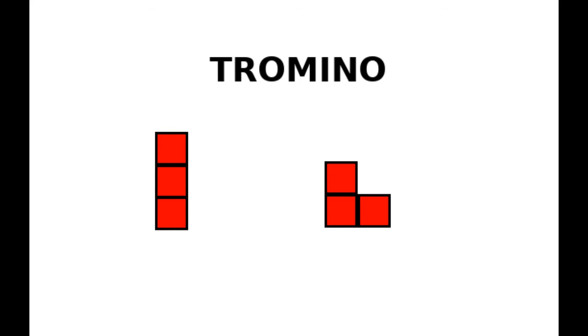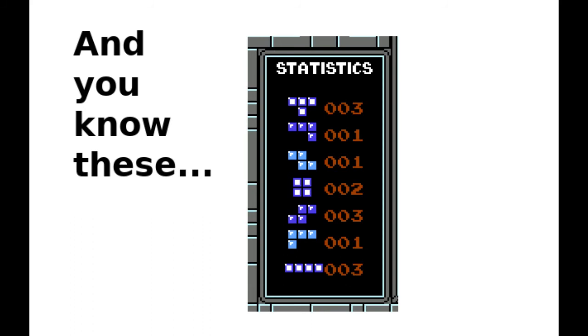When we get to the tromino, we get our first options. There are two separate trominoes. And of course, if you've touched a computer or video game system in the last thirty years, you know about these seven pieces.